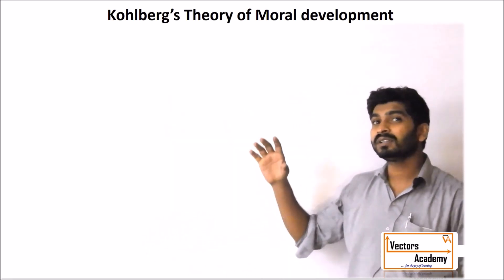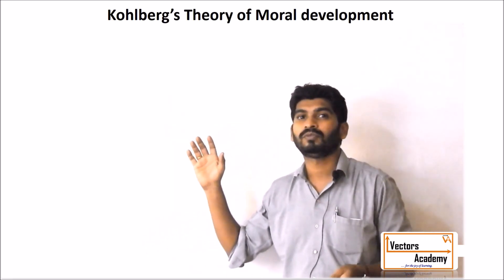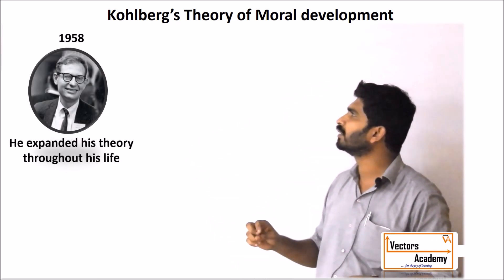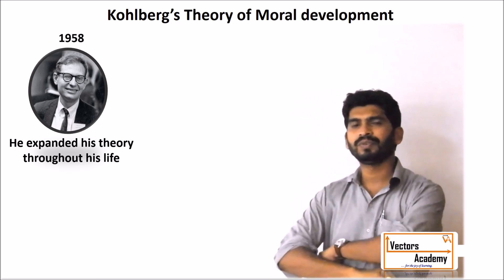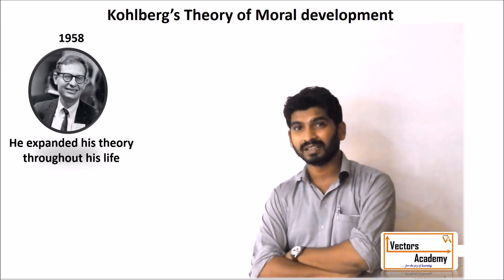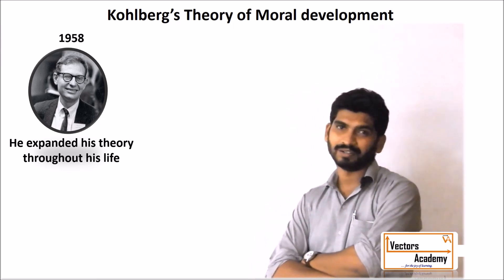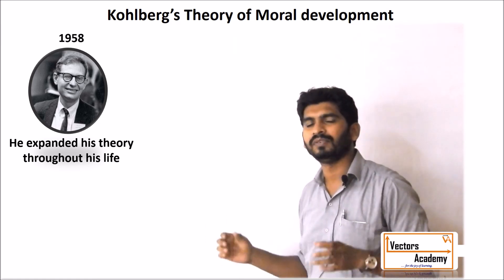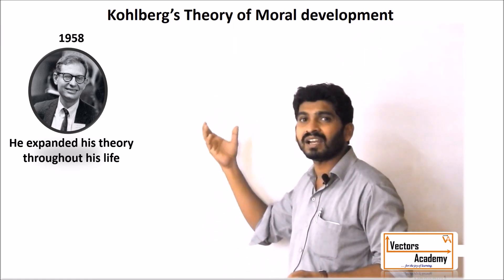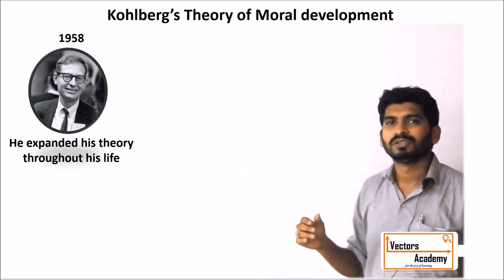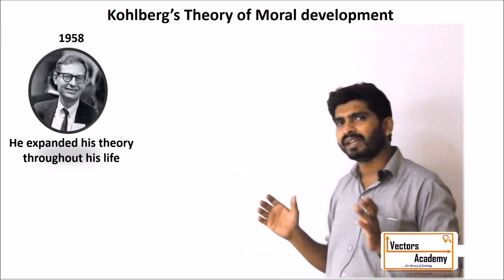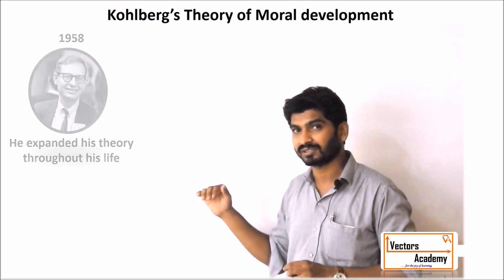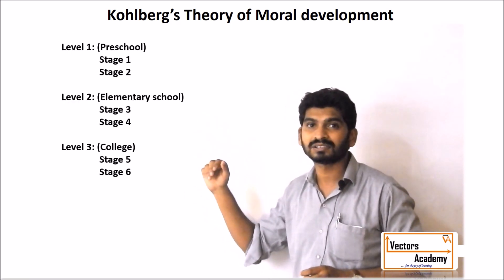Let us today have a look at what is Kohlberg's theory of moral development. Lawrence Kohlberg was at the University of Chicago when he studied Piaget's theory of moral development. He realized that it is very difficult to understand how the mind develops, so he classified moral development into six different stages, or three different levels.